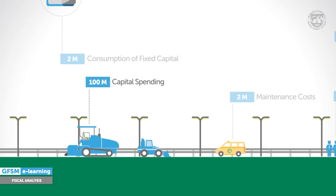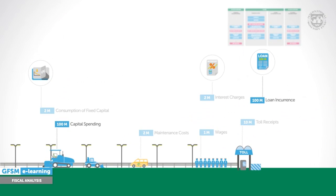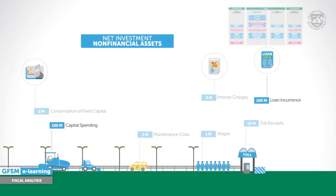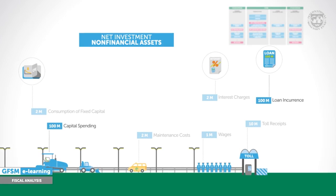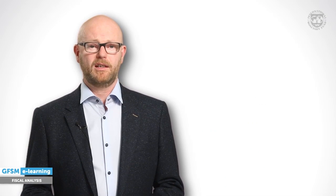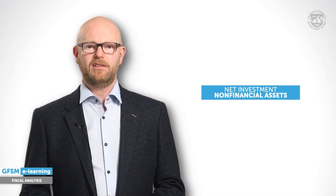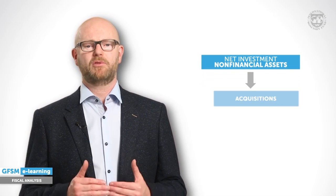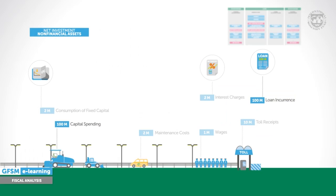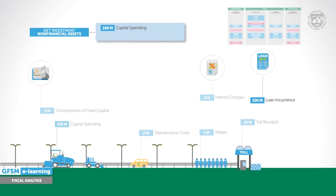What about the acquisition of the road and the toll booths — the capital spending? GFSM refers to this as investment in a non-financial asset. This spending is different from expenses since the government receives an asset in exchange, so net worth is not affected. More precisely, the net investment of such assets is measured, which means we subtract disposals and the consumption of fixed capital from the acquisitions. In the example, the initial investment amounts to 100 million, and for net investment we have to subtract the consumption of fixed capital for this period.